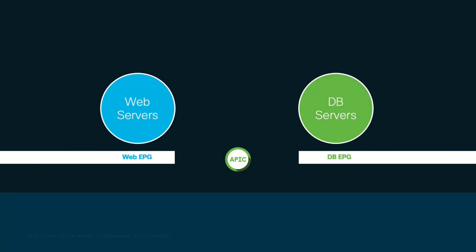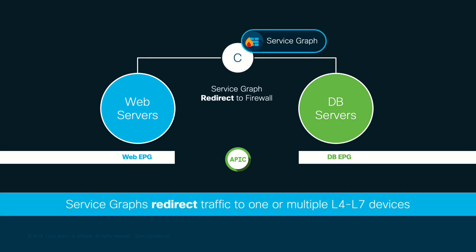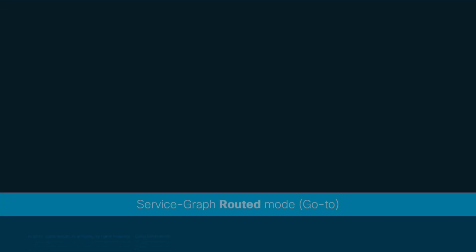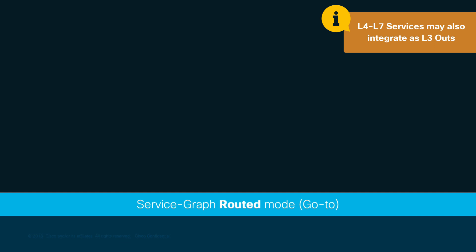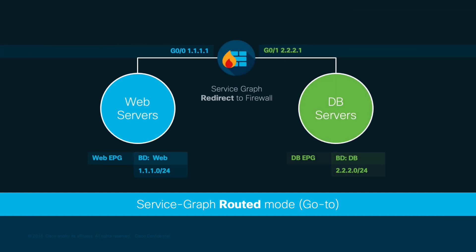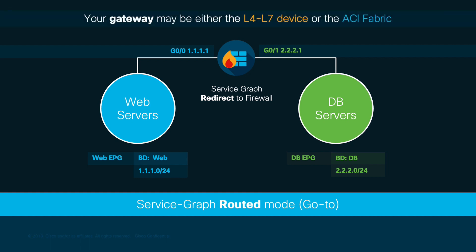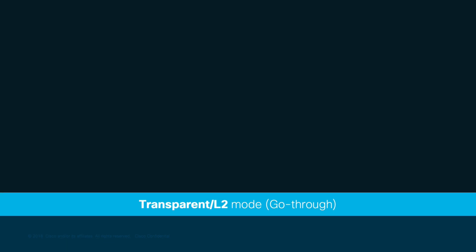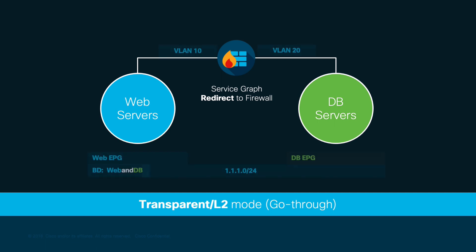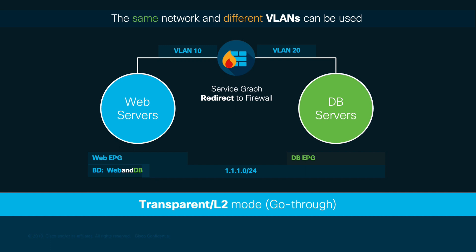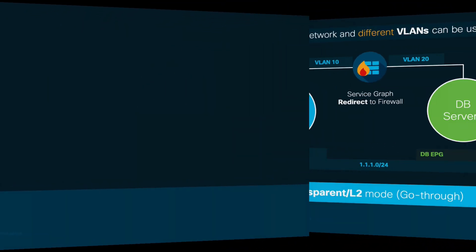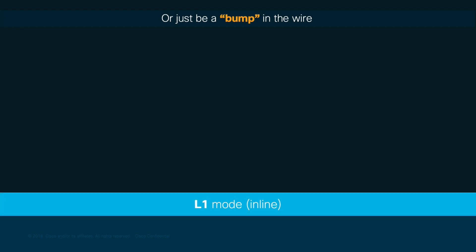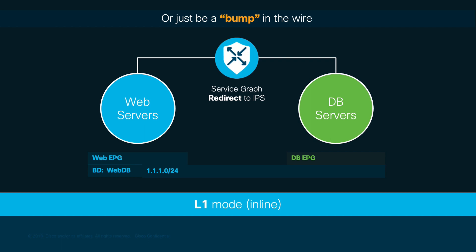Just like in traditional environments, we may integrate our L4-L7 services in multiple ways. Service Graphs can work in routed mode, also known as go-to, or even peer against the fabric as a Layer 3 out. In this case, we could use the firewall as the gateway for each EPG subnet, or use an AnycastAS gateway in the ACI fabric and configure features like policy-based redirection in our graph, sending interesting traffic to the firewall's IP. If routed mode is not desired, we may also configure a service graph in transparent mode, also known as L2 or go-through, preserving the same subnet across different EPGs while segmenting at the firewall level through different VLANs. There is also Layer 1 mode, or inline, which is a bump in the wire for inter-EPG traffic — useful when integrating devices such as IDS and IPS.